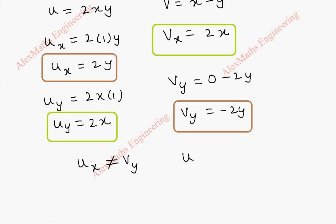At the same time, u_y is not equal to minus v_x. They are equal, but actually they should be of opposite sign. So CR equations not satisfied.